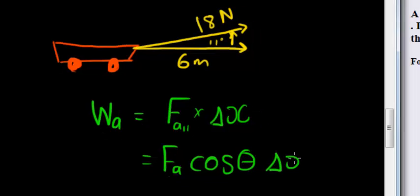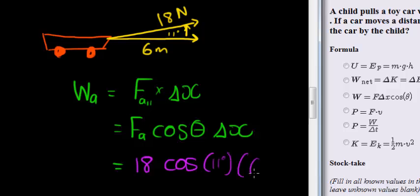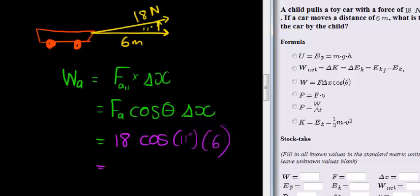Okay, I'm sure you're getting very bored of hearing that, but yeah, it's not that difficult. So we have that our applied force is 18 newtons, cos of the angle between them is 11 degrees, and the displacement is 6 meters.